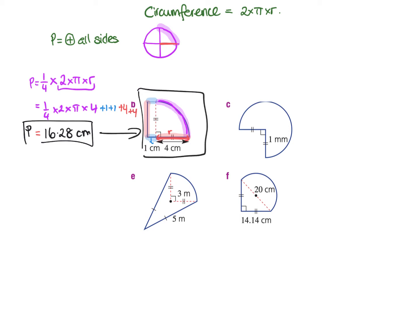Let's do this again. Looking here, we have 3 quarters of the circle. So when we're finding the perimeter, we're going to say we have 3 quarters of the circle formula, which is 2 times pi times r, and the radius here is 1. We need to remember we still have to add these flat sides — they're just the radius length, so it's like adding a 1 and a 1. So you do 3 quarters times 2 times pi times 1, then add 1, add 1.